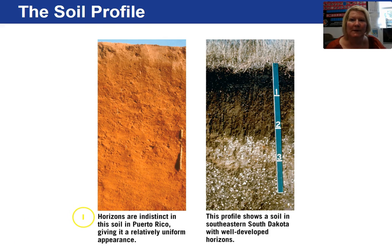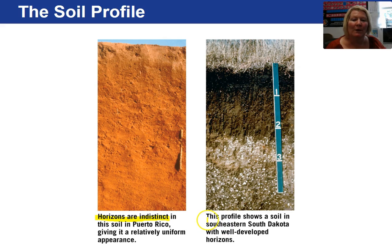Here's an example of a soil profile where the horizons are indistinct — you really can't see a difference. Whereas this profile shows definite, well-developed horizons.